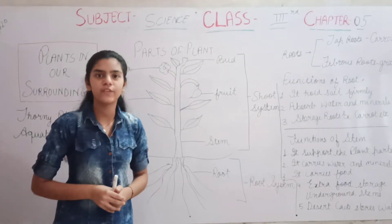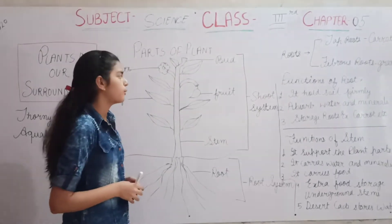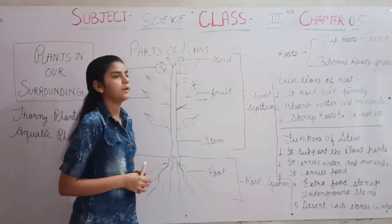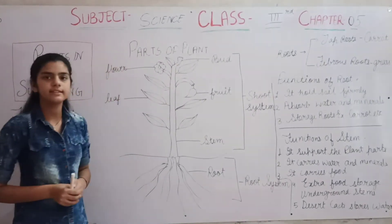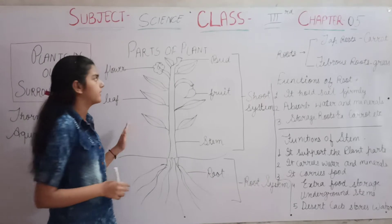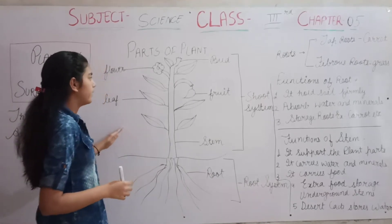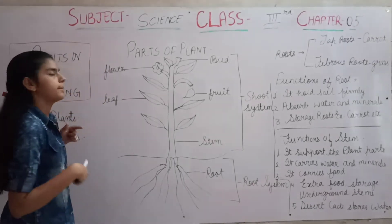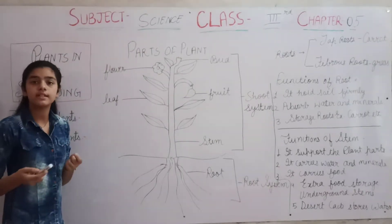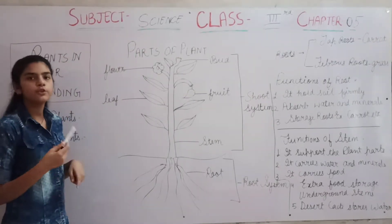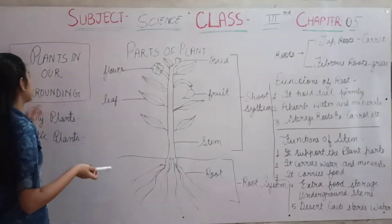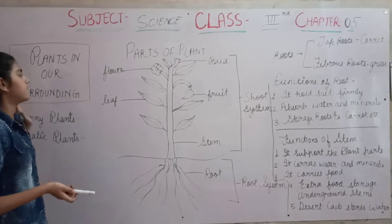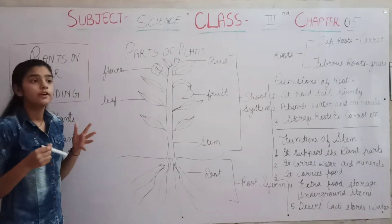Good morning everyone. This is new morning to the academy online classes. This is class 4. Now we will read chapter number 5. Now we will start our new chapter that is plants in our surrounding.